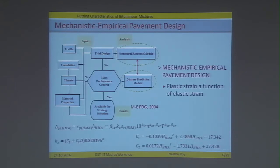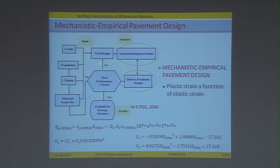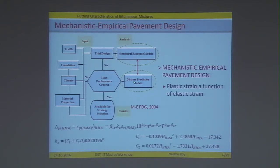When we look at the mechanistic empirical pavement design, it starts with a lot of input data including traffic, foundation and subgrade details, climatic conditions, and material properties — all going into a trial design. The structural response models find what the structural response is, based on elastic analysis, and this is related to distress prediction models. These models determine deformations or distresses, and once the performance criteria is met we stop, else we change the trial design or go for better performing mixes.